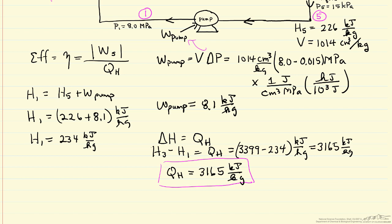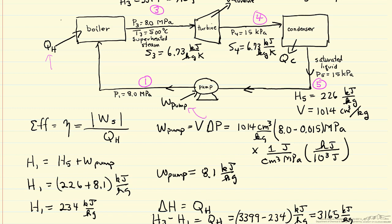We now need the work generated by the turbine. We have the enthalpy entering the turbine, 3399. We need to calculate the enthalpy leaving, and the way we do that is we know the pressure and we know the entropy. We can go to the steam tables at this pressure and calculate the entropy. If we look at the steam tables, we see this entropy is between that of a liquid and that of a vapor, so we're going to have some quality.